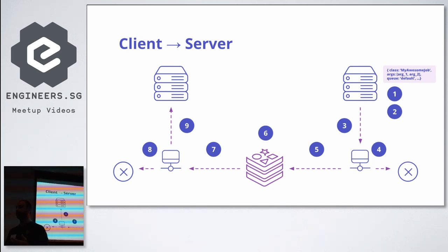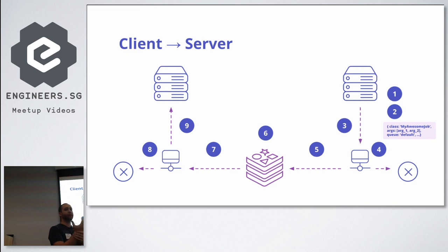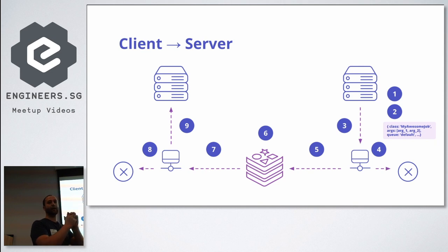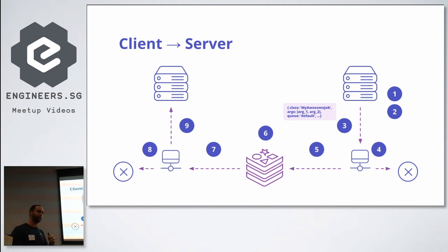As it goes down, it goes through a layer called the middleware. There's a client middleware and a server middleware. The client middleware can choose not to send the job to Redis — you can configure that. The middleware can take a job and decide it doesn't want to send it to Redis and returns nothing. Your code will continue executing thinking it emitted a job, but the middleware could discard it. Otherwise, the job goes through the middleware, comes back up, and is wrapped up and pushed into Redis.